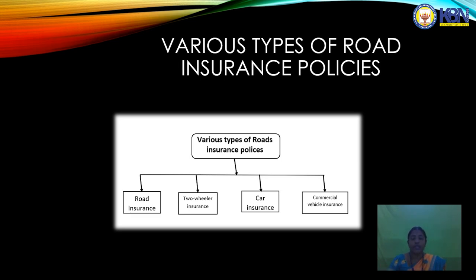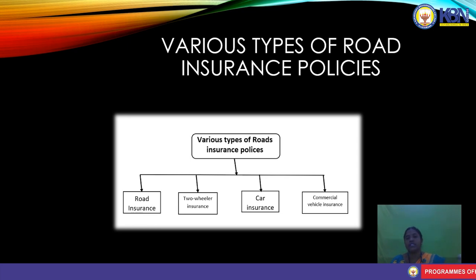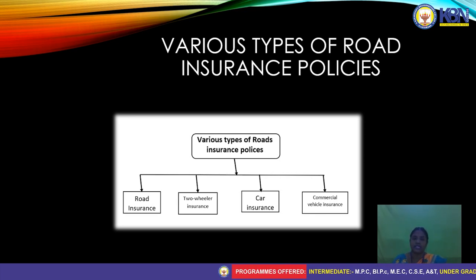Commercial insurance covers commercial vehicles, not personal vehicles. This type of insurance covers heavy containers, heavy load vehicles, large trucks, and lorries carrying bulk goods on roadways. The amount of premium depends on the price and place of registration of the vehicle. These are the four types of road insurance policies.